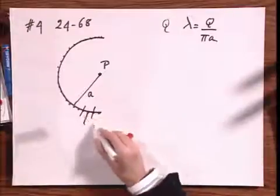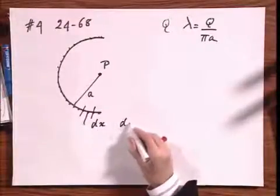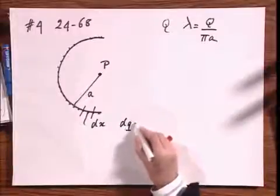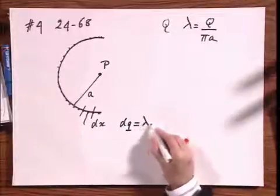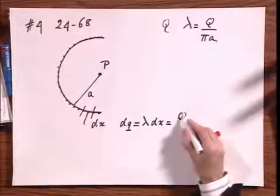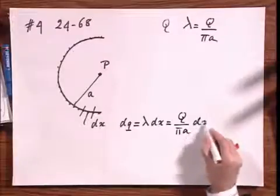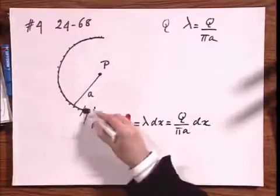I'm going to carve out here a little section DX. That little section DX contains a charge DQ, which is lambda times DX, which is therefore Q divided by pi A times DX. That is the little amount of charge here.